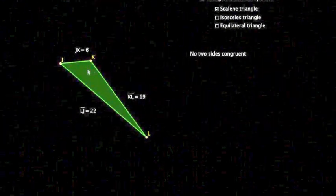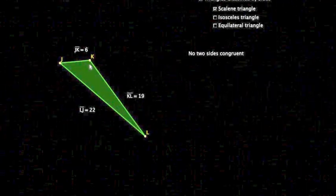And then our scalene here, I would say this is a scalene obtuse triangle because this angle, angle JKL, definitely looks like it has an angle measurement of greater than 90 degrees.